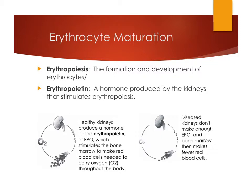Erythropoiesis is the formation and development of erythrocytes, also known as red blood cells. A really important part of that process is the production and release of erythropoietin — a hormone produced by the kidneys that stimulates erythropoiesis. Healthy kidneys produce erythropoietin, sometimes abbreviated EPO, which stimulates the bone marrow to make red blood cells.